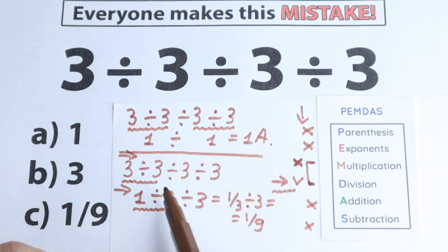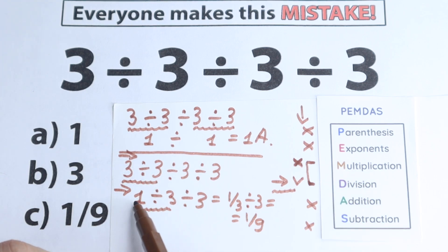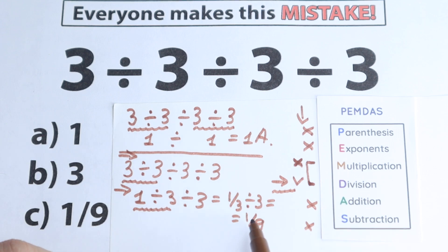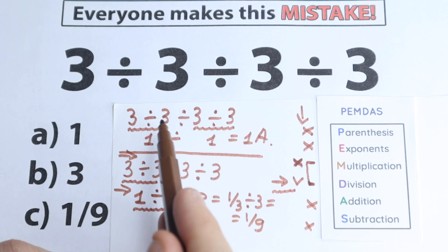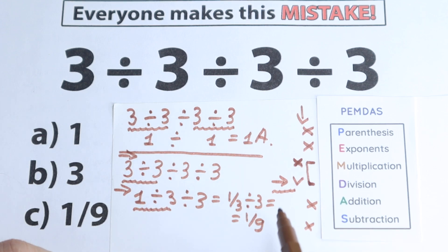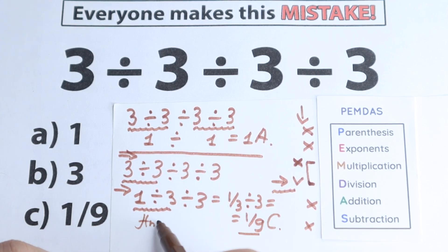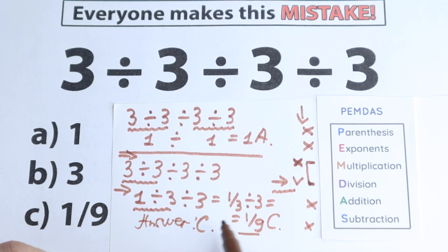So once more: from left to right we scan the first sign, divide, then the next first sign from left to right, divide again. It's a tricky question because a lot of students say the correct answer is option A. But in our case, the correct answer is 1 over 9 — that is option C.